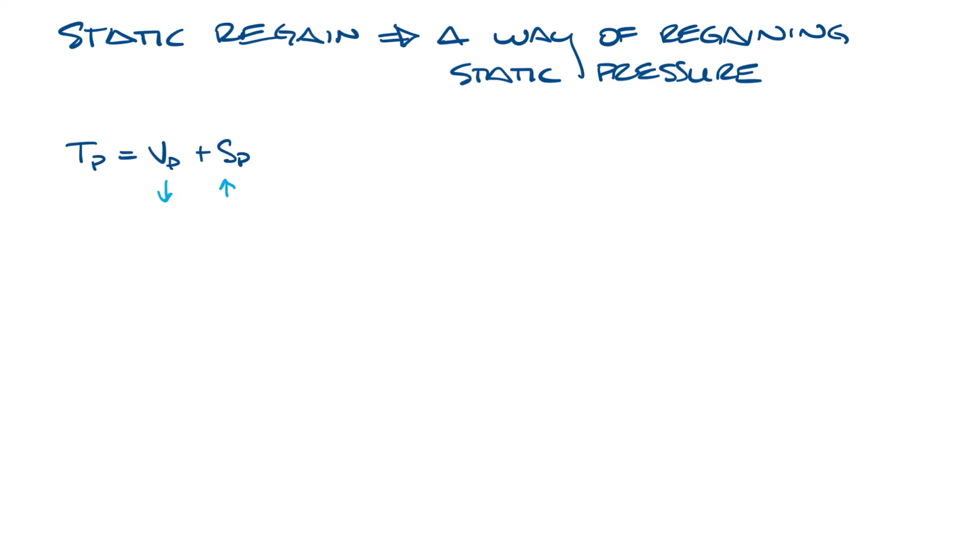So how do you change the velocity pressure? Well remember that the velocity pressure equals the square of the velocity divided by 4005. So if your velocity goes down, your velocity pressure also goes down.